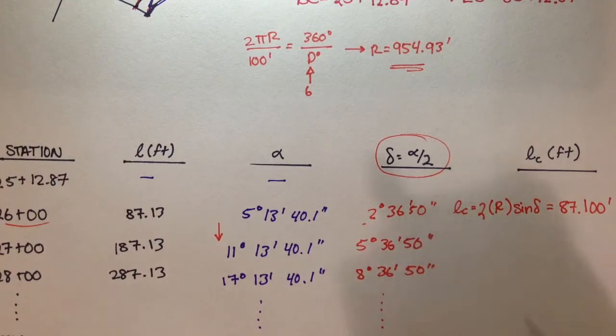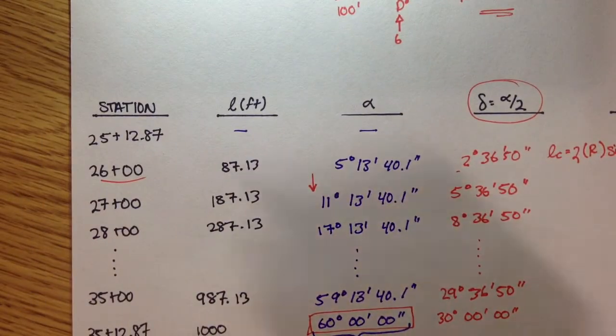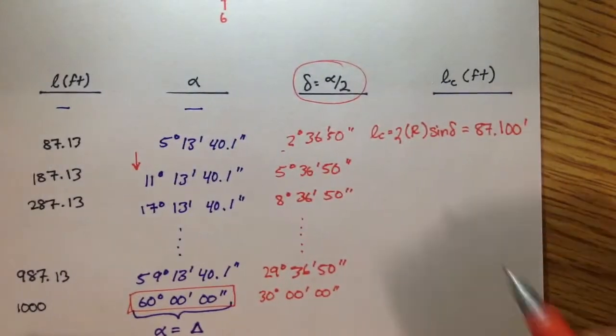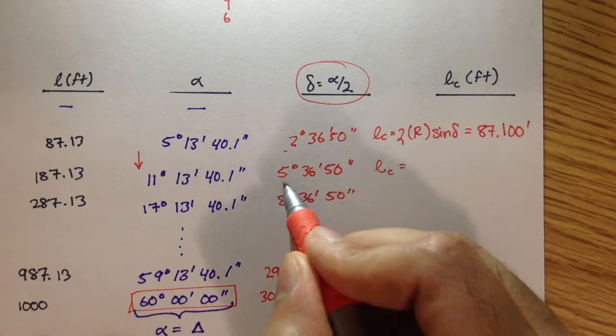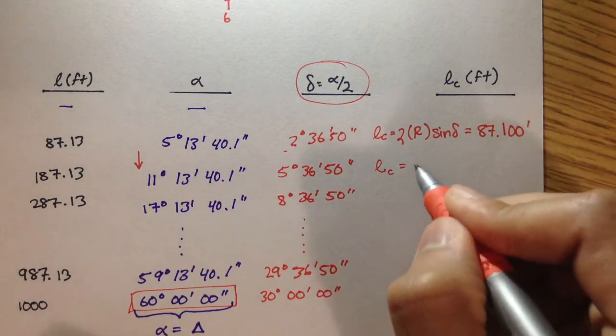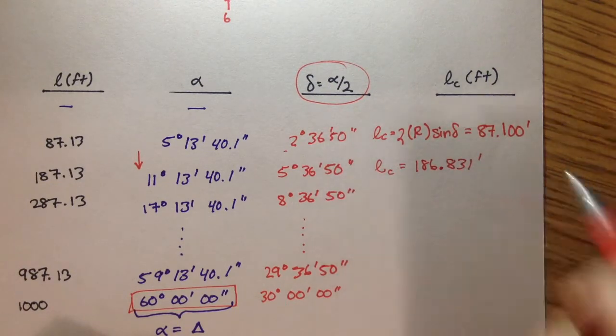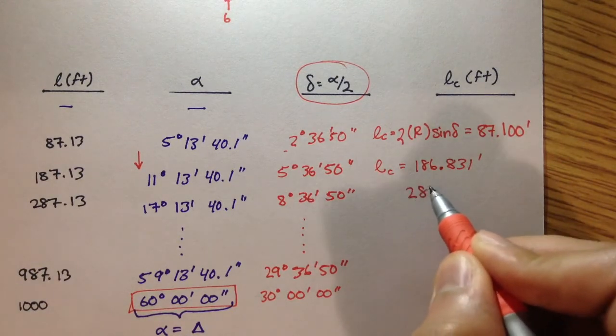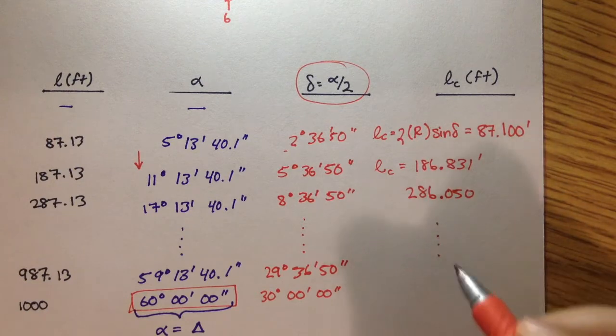If we went to this next station 27 plus 00, and we solved for LC here, 2 times R times sine of 5 degrees 36 minutes 50 seconds, we should get 186.831 feet. And if we did it for station 28 plus 00, we get 286.050, so on and so forth.